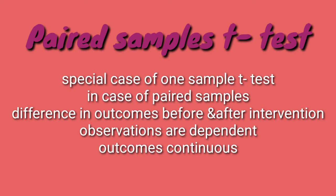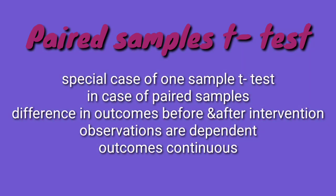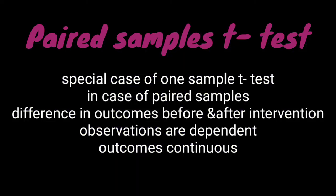Now moving on to paired samples t-test. It is a type of one-sample t-test. It is used in case of paired samples — for example, comparing differences in outcomes before and after a drug or an intervention program. It is used in cases where the observations are dependent or when the outcomes are continuous in nature.